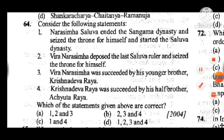Question 64: Consider the following statements — all four are correct: Narsimha Saluva ended the Sangama dynasty and started the Saluva dynasty; Veera Narsimha deposed the last Saluva ruler; Veera Narsimha was succeeded by his younger brother Krishna Devaraya; and Krishna Devaraya was succeeded by his half-brother Achyuta Raya. Answer is D.